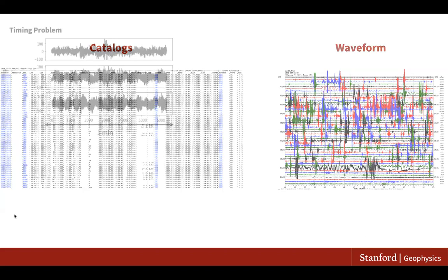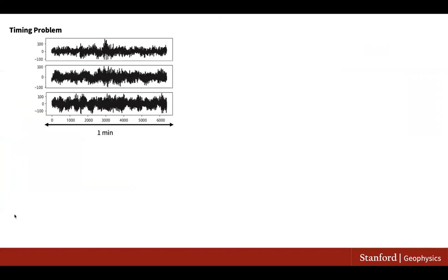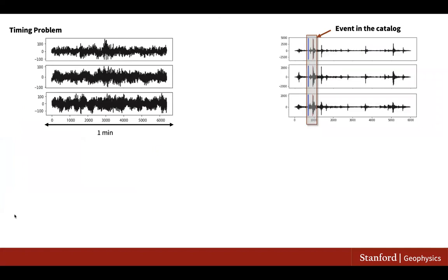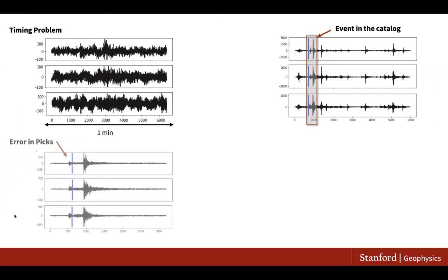For instance, sometimes because of errors in timing or catalogs, you might not find events you're looking for on the waveform based on catalog information. On the other hand, you can find many other earthquakes that you didn't expect. Moreover, hand-picked parameters like arrival times don't mean they're always 100% accurate.